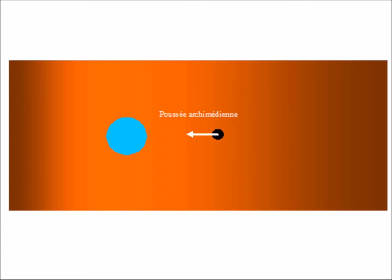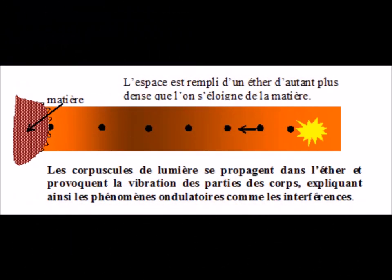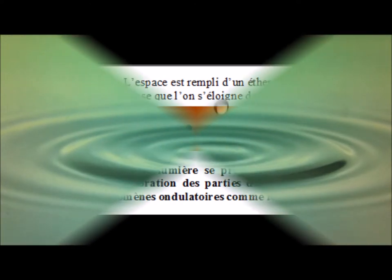However, the push of Archimedes results from gravity. It cannot therefore be the cause of gravity. His theory of light is a strange mixture of emissive theory, therefore granular, and of an ether filling space, but of variable density. This variable density allows it to explain, in particular, the refraction.